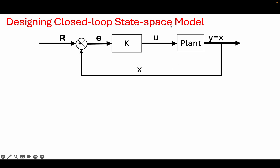This is our closed loop representation. We want to design a gain matrix K that will generate an input U which will drive our system such that the output becomes equal to the reference. Our U is equal to K times E, and E is just the reference minus the state. This is where state feedback control gets its name — it is called state feedback because we are feeding back the states of the system to compute the control input.